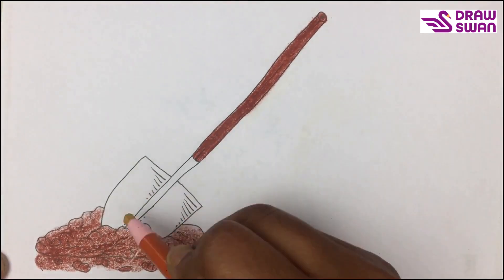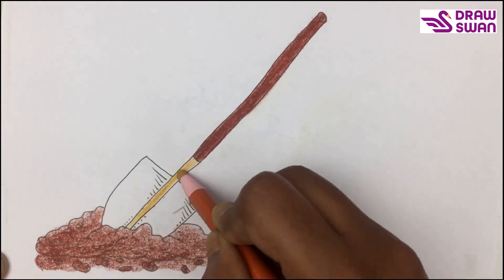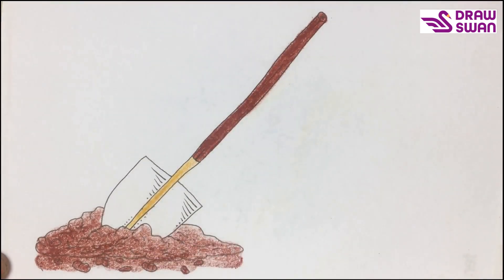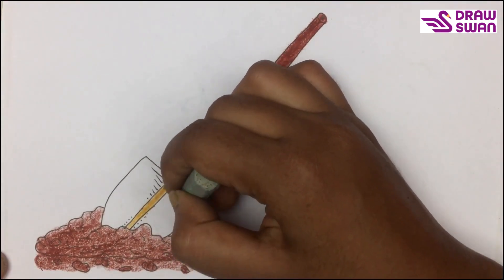And now I'm using a mustard color. And now I'm using gray color to color this spade.